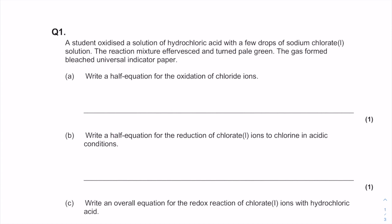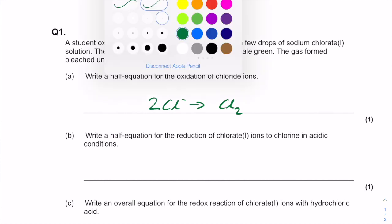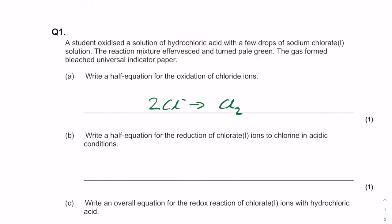Okay, so first off we'll look at the oxidation of chloride ions. Chloride ions are Cl⁻ and they're being oxidized. Remember, oxidation is loss, to form Cl₂. Before we go any further, we'll balance this and then look at how the electrons are moving over. We've got chlorine oxidation state here is -1 and the oxidation state of chlorine over here is 0.